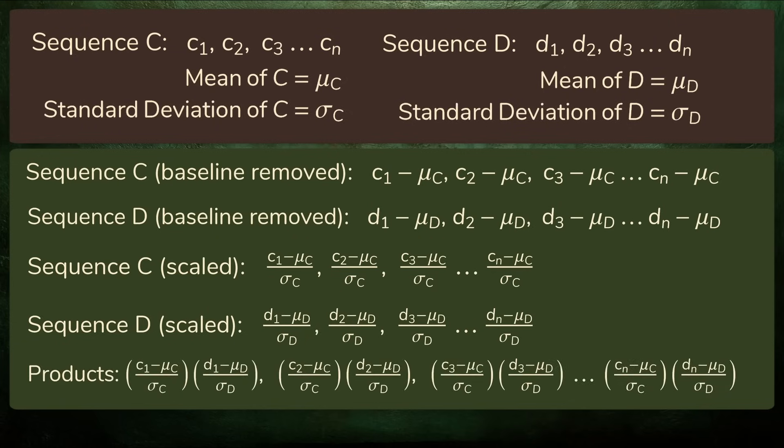Next, we multiply the corresponding z-scores. If both are above average, the product is positive. If both are below average, the product is still positive. But if one is above and the other is below average, then the product is negative. Each product tells us are these two numbers on the same side of average or opposite sides of average, and if so, by how much?